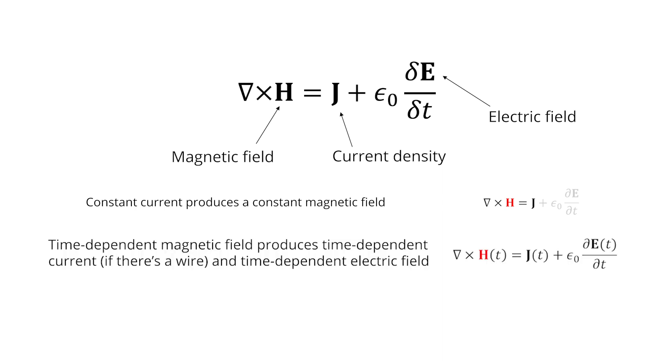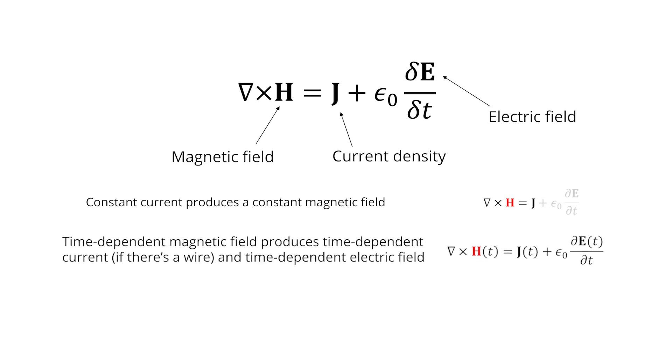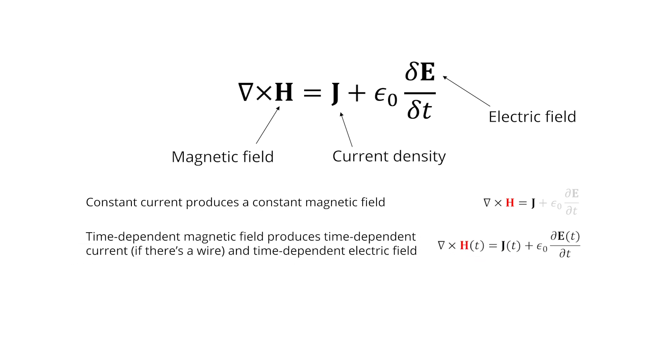The second situation I'd like to describe is where you have a time-dependent magnetic field. You could do this quite simply by shaking a magnet. And if you shake a magnet near a wire, you're going to induce a time-dependent current flow in that wire. This is exactly how a generator works in an electrical power plant.